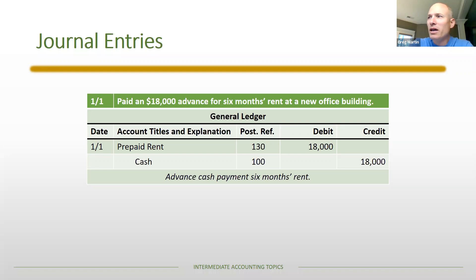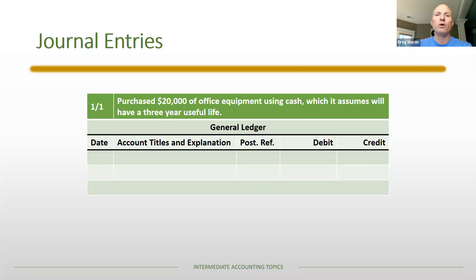I want us to move past just memorizing journal entries and think about why these are the accounts. Next transaction: purchase twenty thousand dollars of office equipment using cash, which is assumed to have a three-year useful life. Office equipment is being purchased using cash. What's the debit and what's the credit?